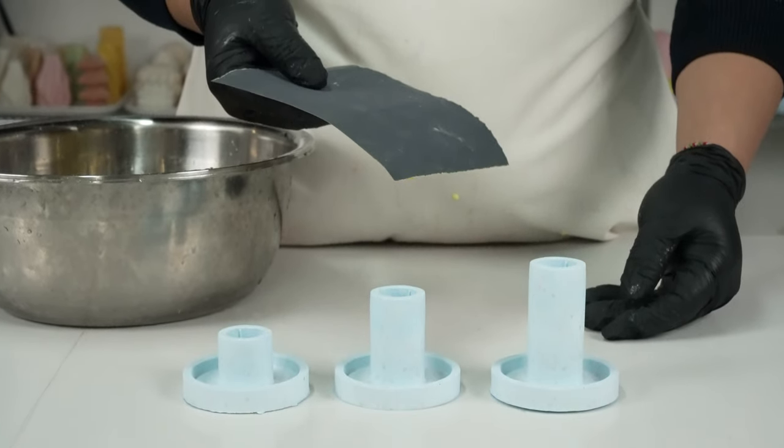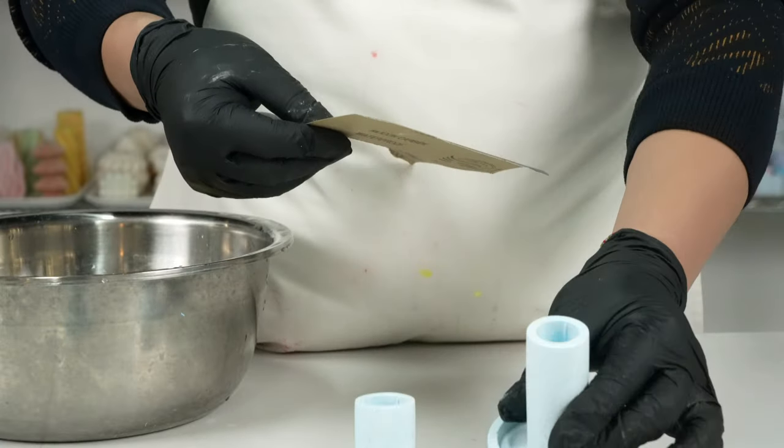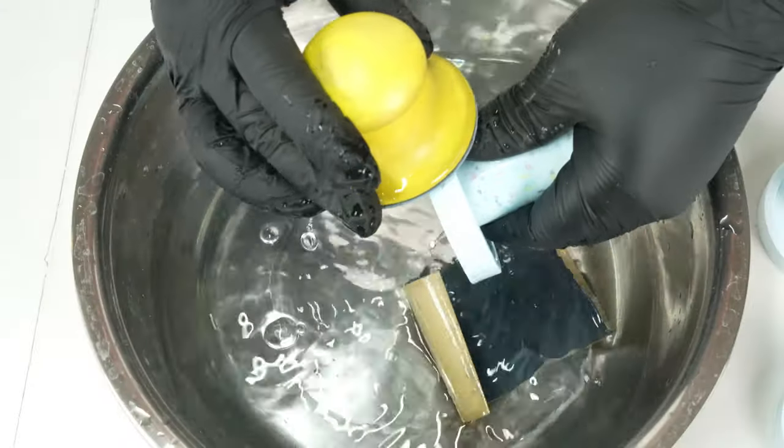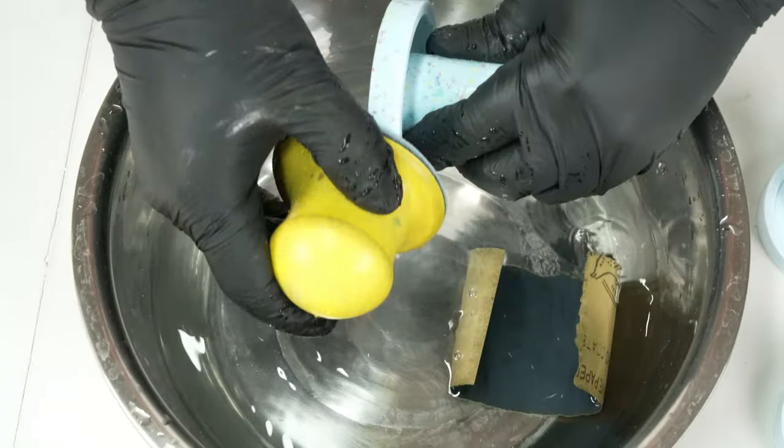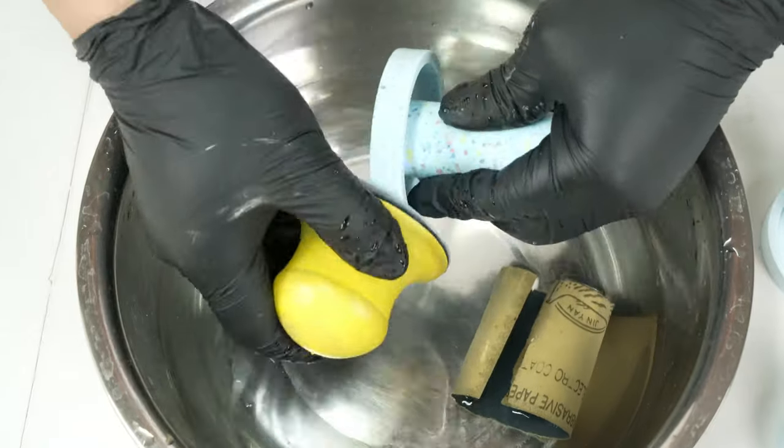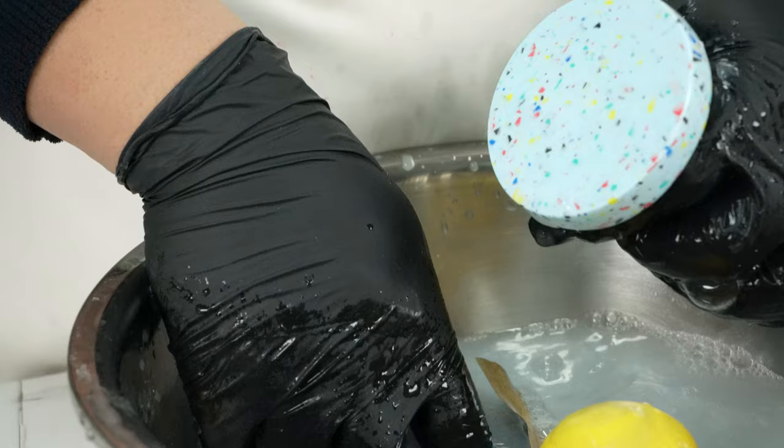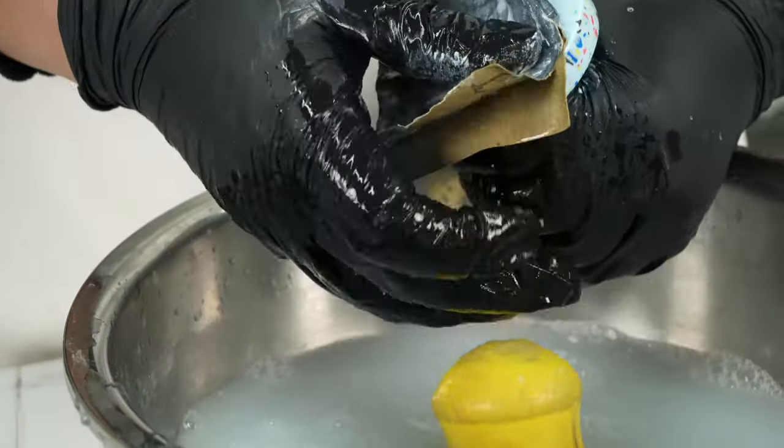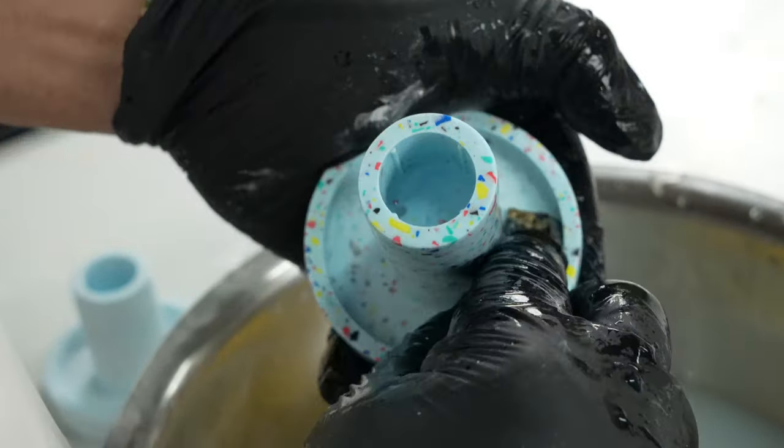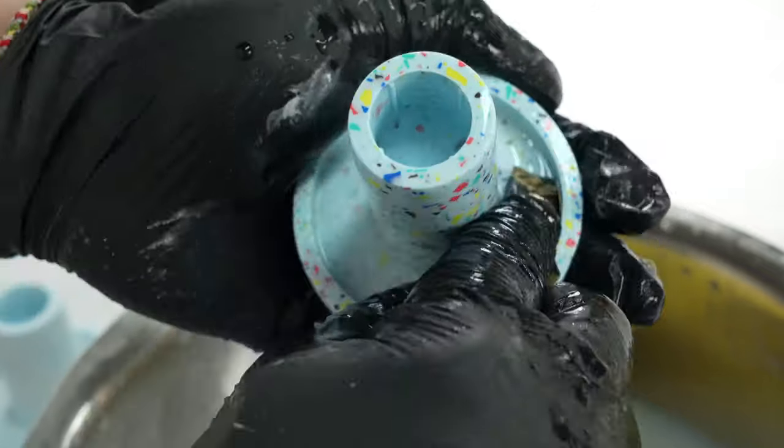Next comes the sanding part. The sandpaper for sanding can be cut to the size you need. Today we are teaching you how to make terrazzo-style candle holders. Now the color of the candle holders needs to be polished with sandpaper before they can be revealed. Use sandpaper to sand out all the colors of the candle holder, but please note that the inside of the candle holder cannot be sanded. Because there are four textures inside, it is designed to fix the candle.